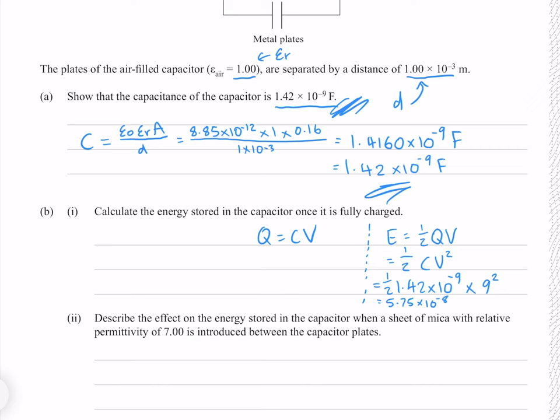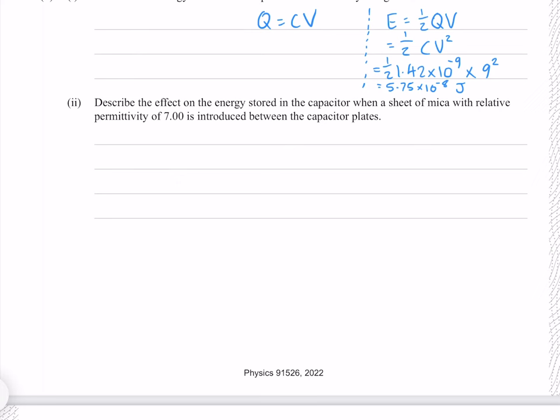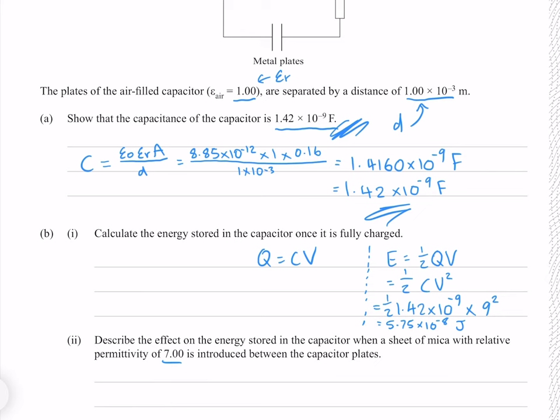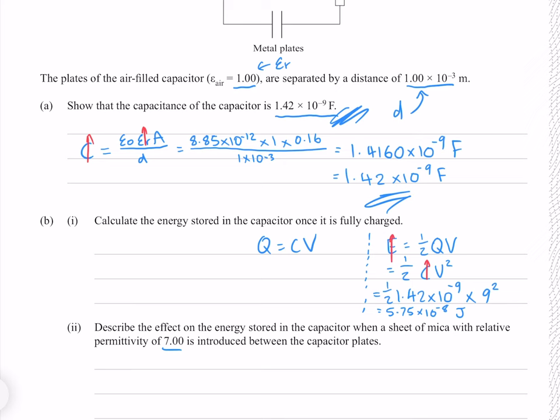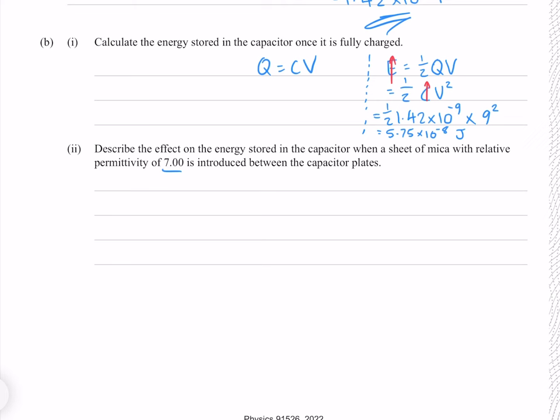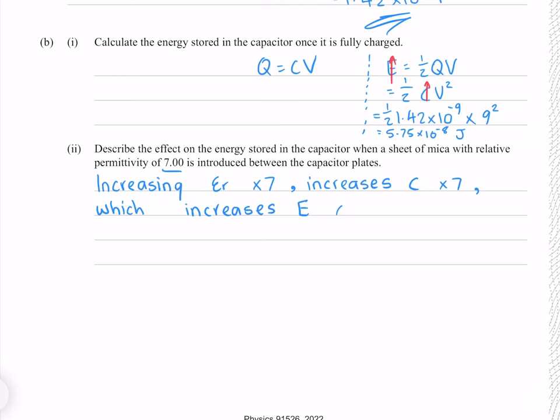Describe the effect on energy stored when a sheet of mica with relative permittivity 7 is introduced between the plates. Introducing mica increases the permittivity epsilon-r, which increases capacitance, which increases energy. Because relative permittivity goes from 1 to 7, all of these increases are by a factor of 7: permittivity increases by 7, capacitance increases by 7, and energy increases by a factor of 7.